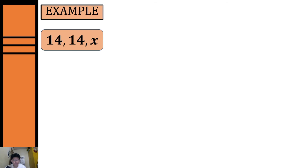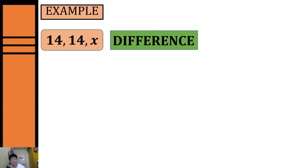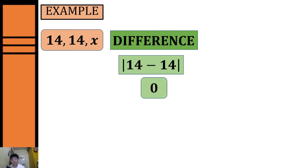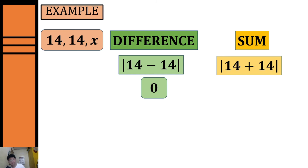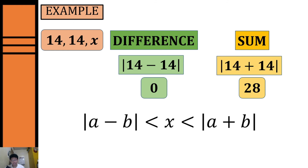For our last example, we're given 14 and 14 as the dimensions of our first and second side. First, we get the positive difference: the absolute value of 14 minus 14 equals 0. Then we get the sum: 14 plus 14 equals 28. Substituting into our formula, the possible measurement of our third side will be between 0 and 28.